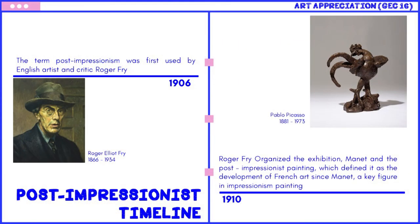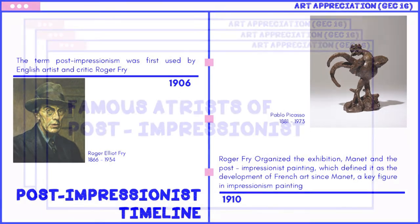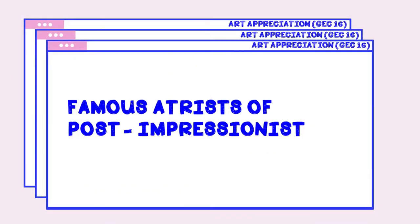The term post-impressionism was first used by English artist and critic Roger Fry in 1906, and then again in 1910 when he organized the exhibition Manet and the Post-Impressionists, which defined it as the development of French art since Manet, a key figure in impressionist painting. The famous artists of post-impressionist art are Paul Cézanne, Vincent van Gogh, Paul Gauguin, and Georges Seurat.